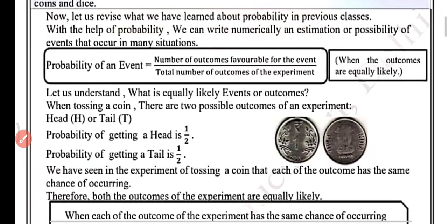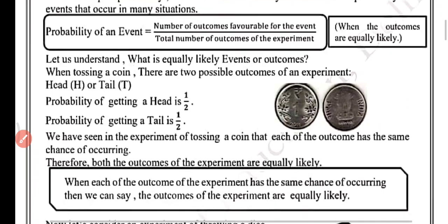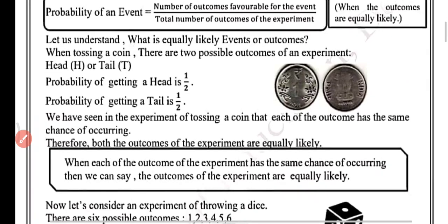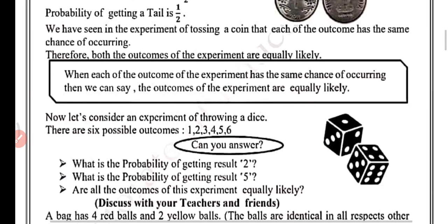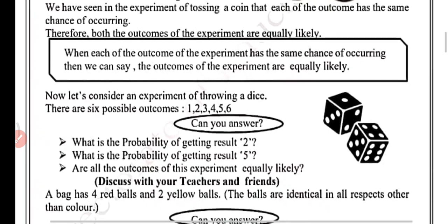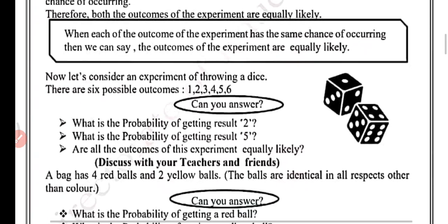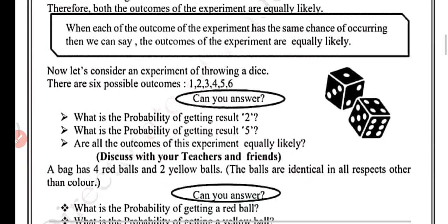Therefore both the outcomes of the experiment are equally likely. When each of the outcomes of an experiment has the same chance of occurring, then we can say the outcomes of the experiment are equally likely — ki jab bhi outcomes ki probability same ho, hum kahenge outcomes equally likely hain. So keep in mind.